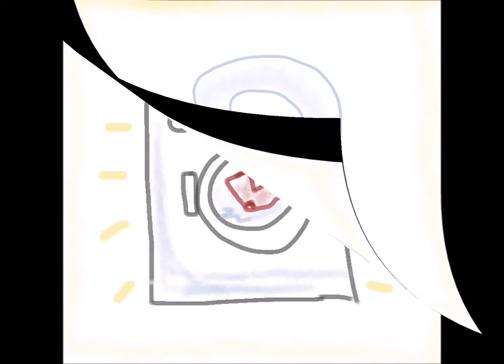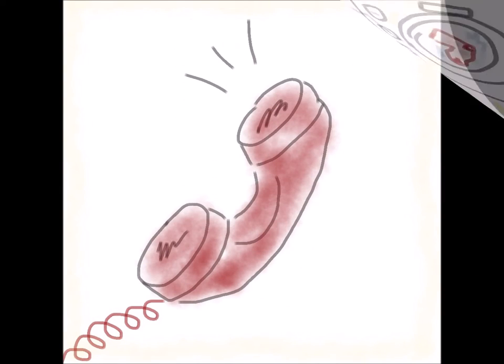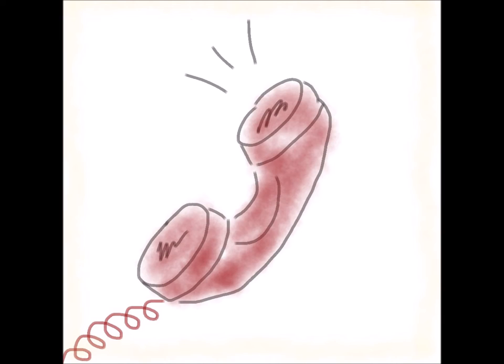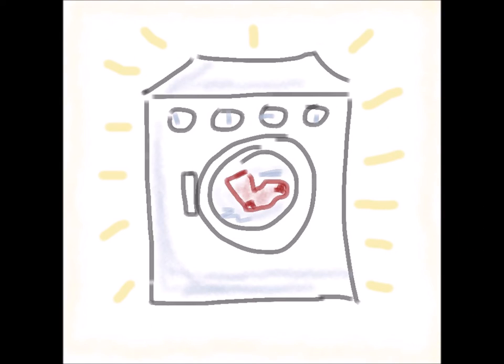Right now. The survivor thought about it for a second and said, I really need a washing machine. The advocate in her advocacy ways validated that washing machines are important and useful and having your own is very convenient. Then she paused and asked the same question again, hoping that maybe the survivor would answer with something else that the advocate typically offers. So what do you need help with right now? The survivor answered, it would really help me out if I had a washing machine.